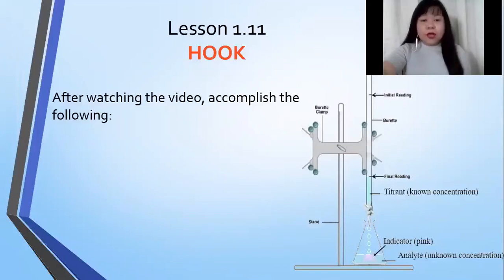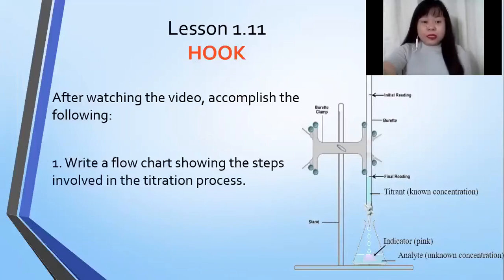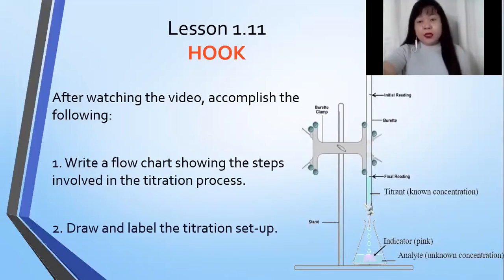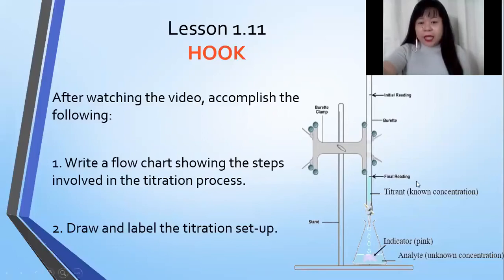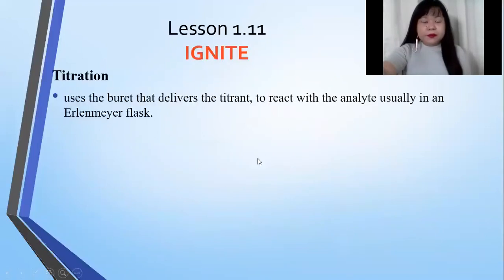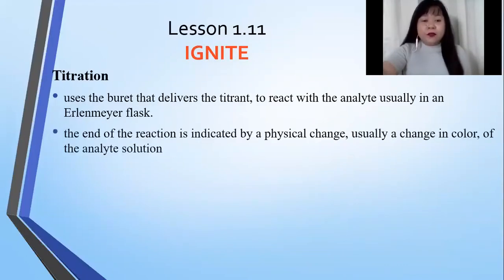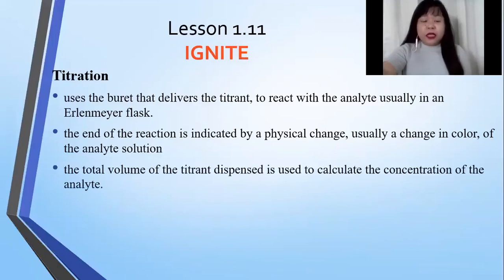After watching the video, you should be able to write a flowchart showing the steps involved in the titration process, and draw and label the titration setup. The most important part is the burette containing our standard solutions, the analyte in an Erlenmeyer flask, and the clamp and stand that supports them. Titration uses the burette to deliver the titrant to react with the analyte, and the total volume of titrant dispensed is used to calculate the concentration of the analyte.